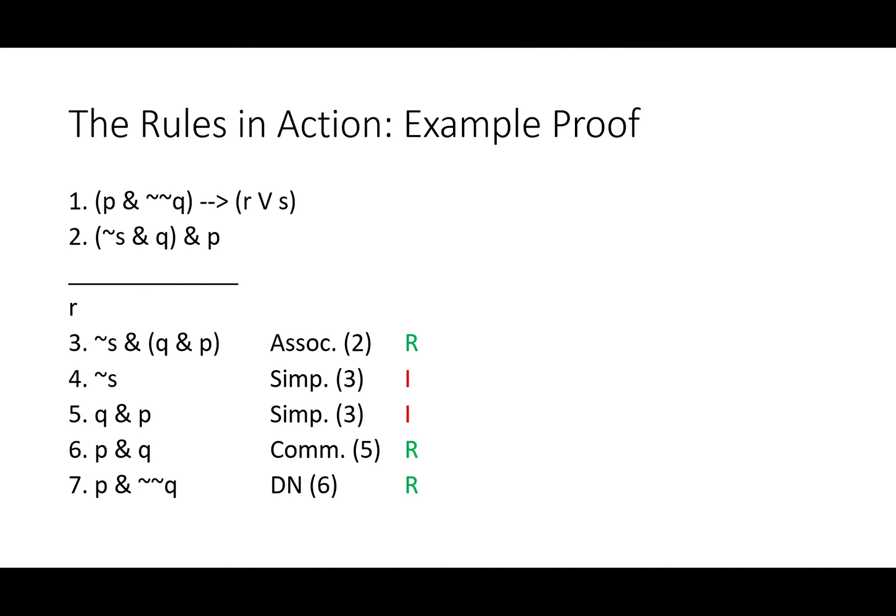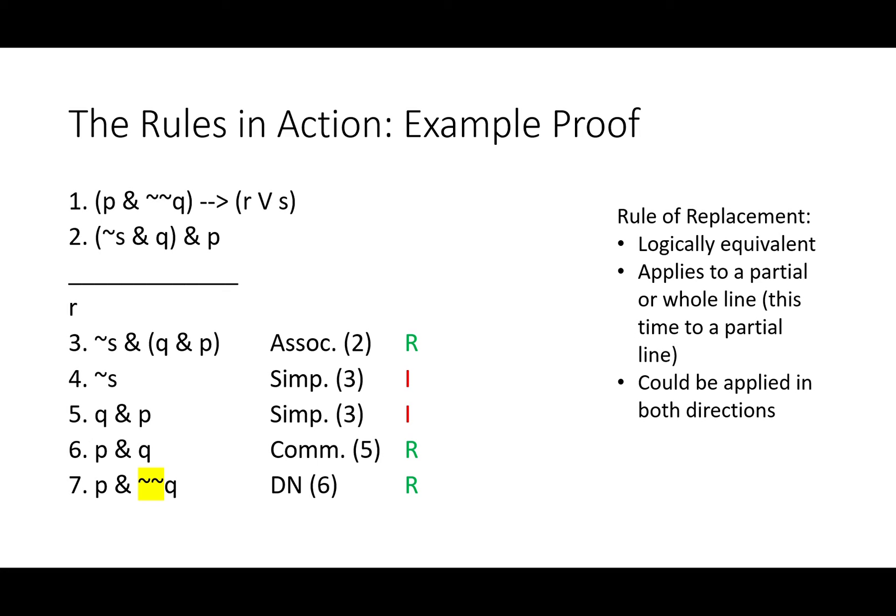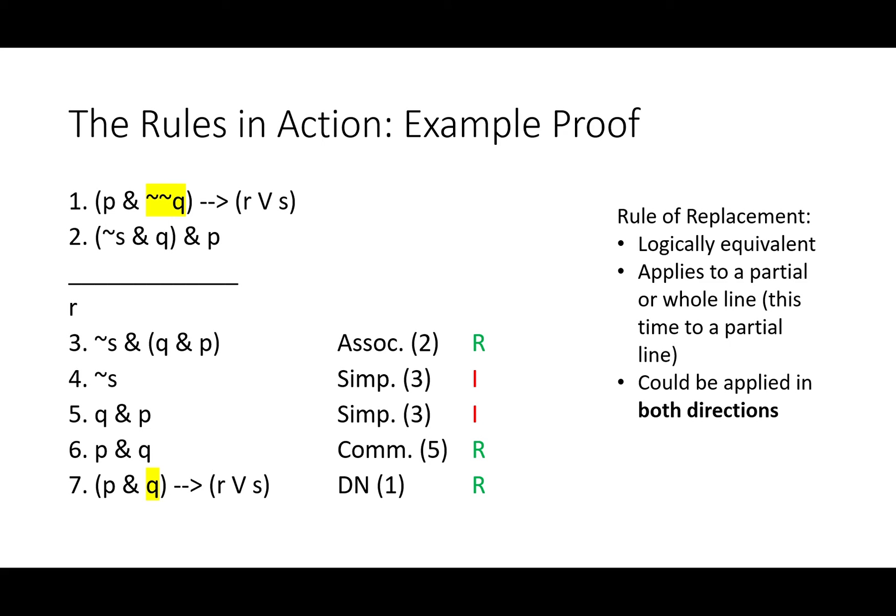Now we'll apply double negation, another rule of replacement. Double negation allows us to add, or subtract, two not signs at once. Why? Because Q is logically equivalent to not-not-Q. Here we've applied it to a partial line. We didn't say not-not P and Q. We said P and not-not-Q. It could be applied in both directions. If we wanted to, we could have applied it to line one and just removed those not signs from the Q in line one and gotten this mess: if P and Q, then either R or S.